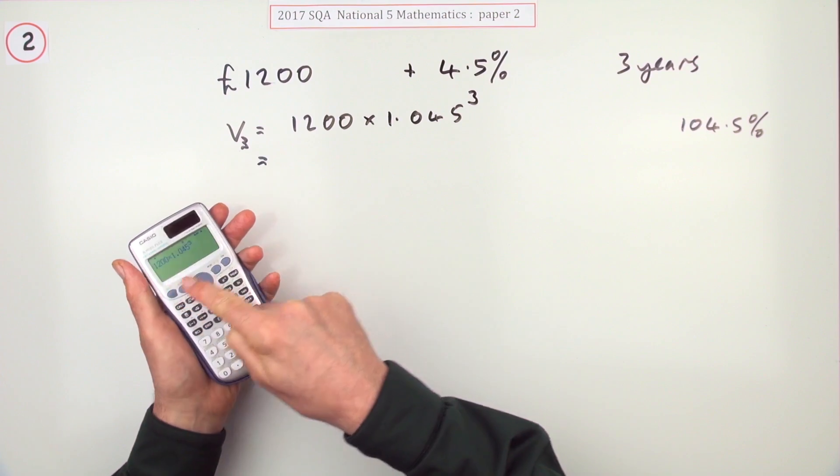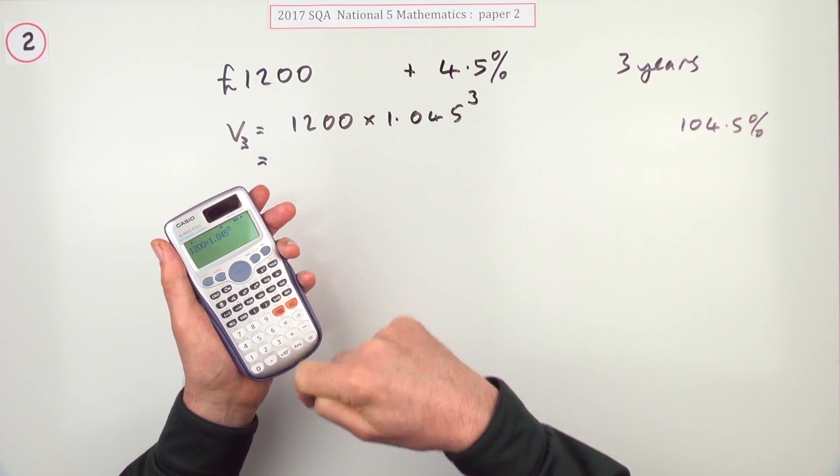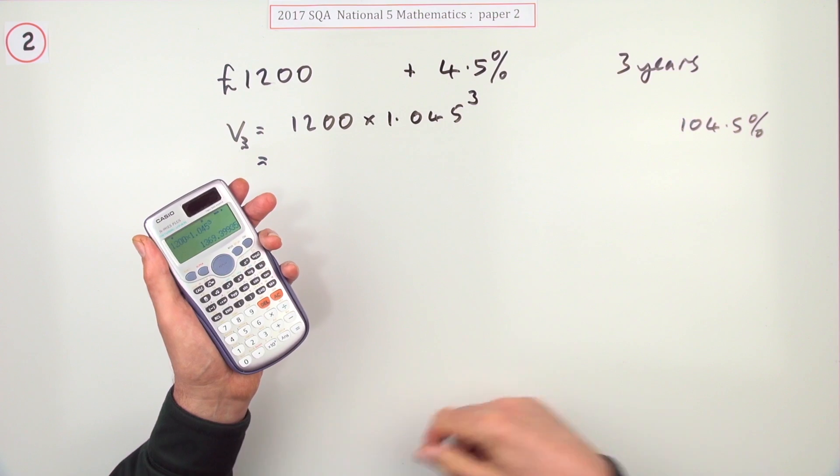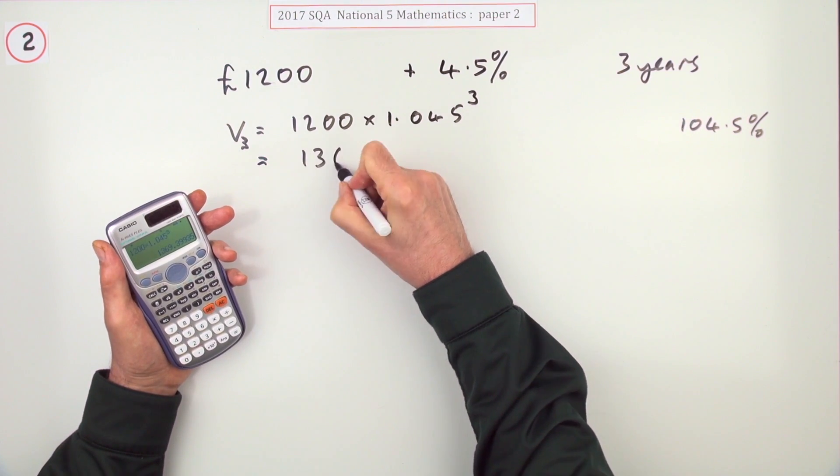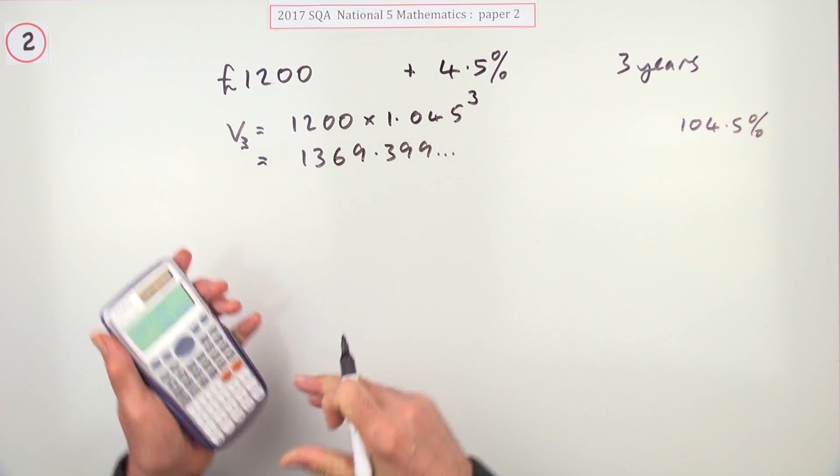So if you type that in, and always just check you've got that written exactly as it is on the calculator, you press the button and you get 1369.399 and so on.